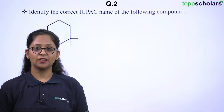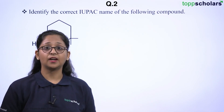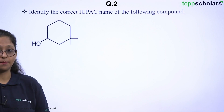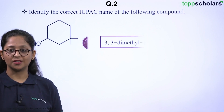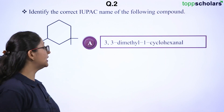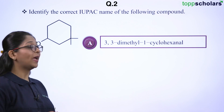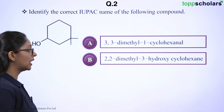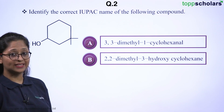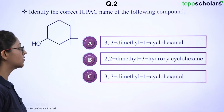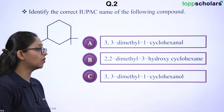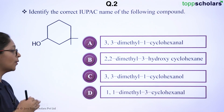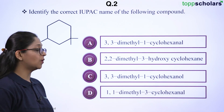The question here is: we have to identify the correct IUPAC name of the following compound and we have four options. Option A: 3,3-dimethyl-1-cyclohexanol. Option B: 2,2-dimethyl-3-hydroxycyclohexane. Option C: 3,3-dimethyl-1-cyclohexanol. And option D: 1,1-dimethyl-3-cyclohexanol.